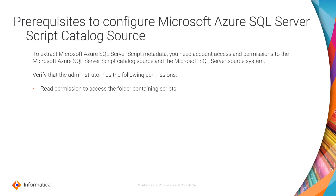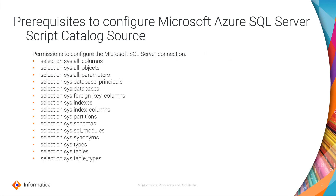Prerequisites to configure the Microsoft Azure SQL Server Script Catalog Source. To extract Microsoft Azure SQL Server Script metadata, you need account access and permissions to the Microsoft Azure SQL Server Script Catalog Source and the Microsoft SQL Server source system. Verify that the administrator has read permissions to access the folder containing scripts, as well as permissions to configure the Microsoft SQL Server connections.